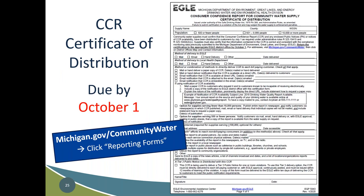Once you deliver the CCR to your customers, EGLE, and your local health department, you are required to send in your CCR certificate of distribution to EGLE by October 1st each year. This form is available at michigan.gov/communitywater under reporting forms. It is essentially a one-page form that tells us how and when you delivered your CCR. The form also includes an option to indicate whether you qualify for the small system delivery waiver.